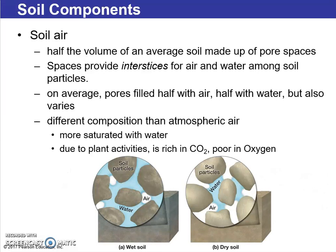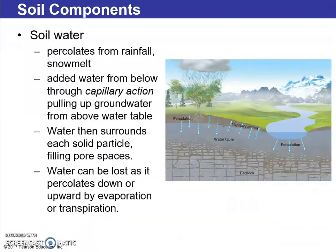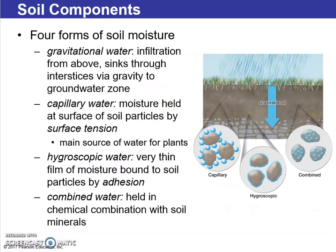About half the volume of an average soil is made up of pore spaces filled with air and water. Air makes up roughly half of that open porous space, and water fills the other half. Soil moisture can be moved around through gravity, through surface tension, and as flow held on top of the soil.